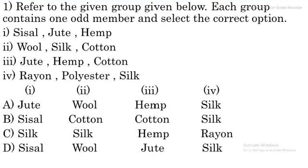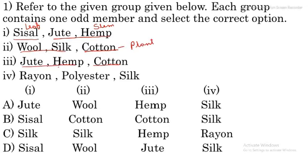Question number one: refer to the given group below, each group contains one odd member, and select the correct option. So here we have two groups — we have to find the odd member. Sisal is a leaf fiber, while jute and hemp are stem fibers. In the next group, wool and silk are animal fibers, while cotton is a plant fiber, so cotton is the odd member.